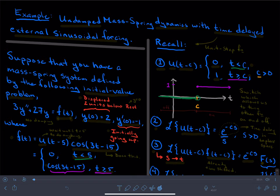So right now I'd like to talk about an undamped mass spring system whose dynamics occur, one, because of initial conditions, but two, because of a time-delayed external sinusoidal force.